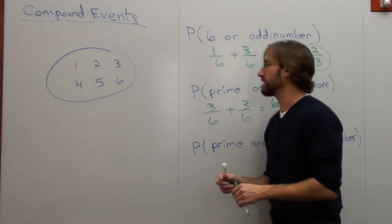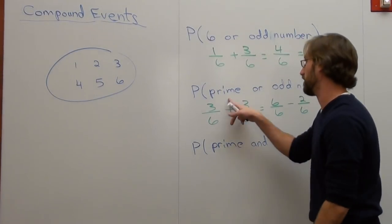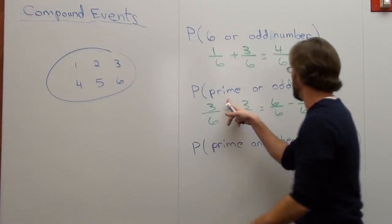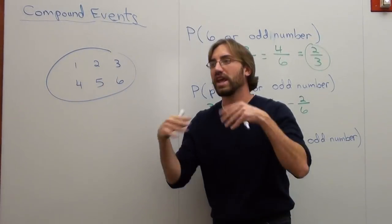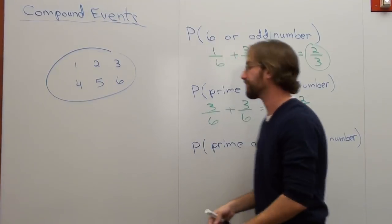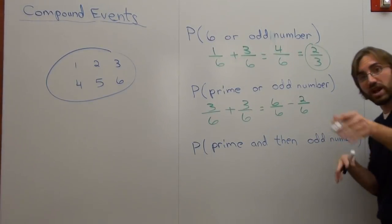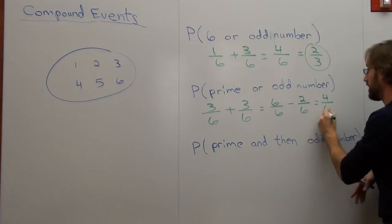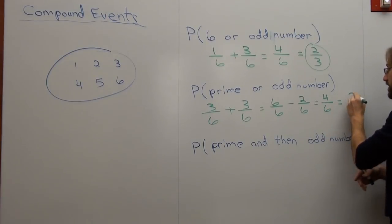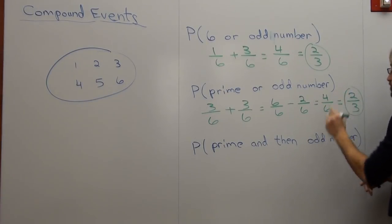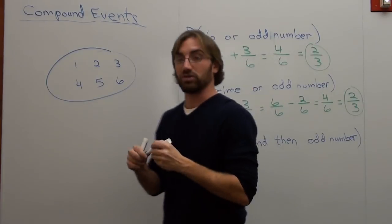Now the reason why I have to do that is because otherwise I'm going to double count. I'm going to say, well, I counted 3 and 5 one time. And I'm going to count 3 and 5 again. You can't do that. You can only count them once. So 6/6 subtracting 2/6 is 4/6, which is 2/3.